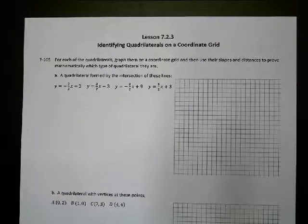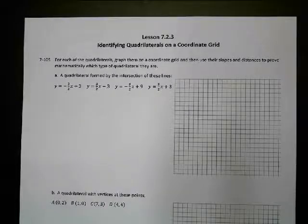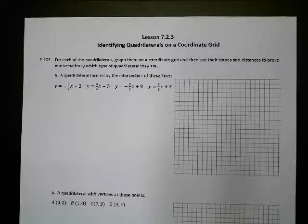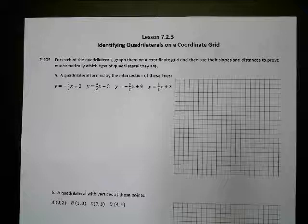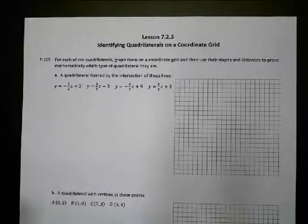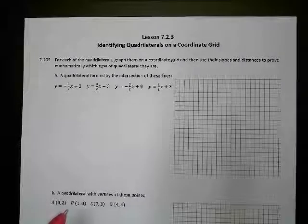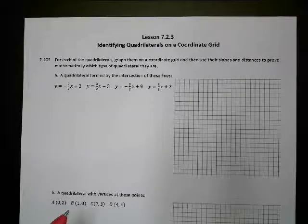All right, Advanced Math A, here we go. We've got Lesson 7.2.3, Identifying Quadrilaterals on a Coordinate Grid. That's a hard word. So anyways, this is our last lesson in Unit 7, so let's do this.